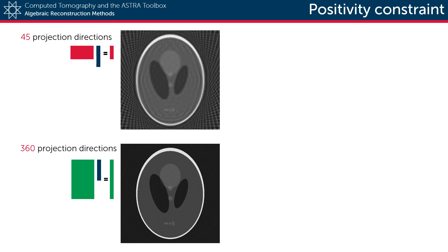As an example, we show here a few SIRT reconstructions of 256 by 256 Shepp-Logan phantoms. On top you see a reconstruction from only 45 projection directions, without any prior knowledge. The lack of sufficient information clearly results in some streaking artifacts and in a decreased contrast on the inside of the object.